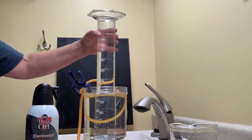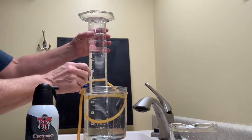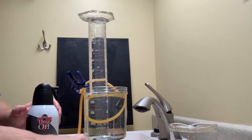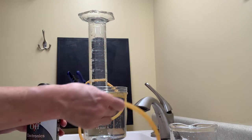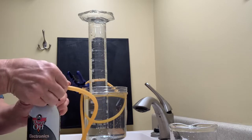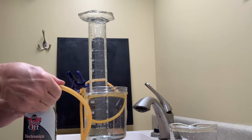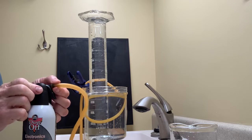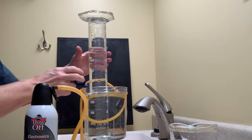And now I'll hook the hose. There, get that cylinder steady. Hook the hose on to the dust off canister. And then submerge the hose up underneath the graduated cylinder.